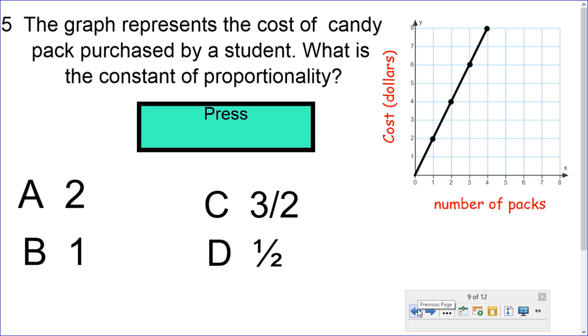The graph represents the cost of candy purchased by a student. What is the constant of proportionality? Is it A, 2, B, 1, C, 3 over 2, or D, 1 half?